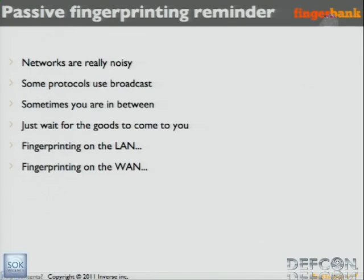There is multicast DNS, iTunes — all that stuff is very, very verbose and noisy, and helps you a lot in identifying software or hardware that you're using. On the WAN, a honeypot is another option — you could do fingerprinting with a honeypot and you'll see kind of the internet noise. It's possible to do that on the WAN also, passively of course.